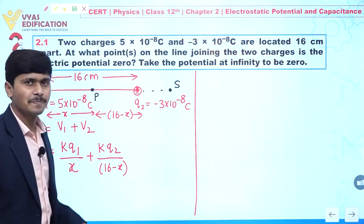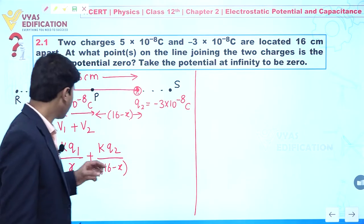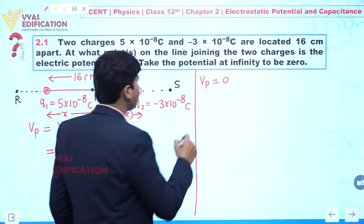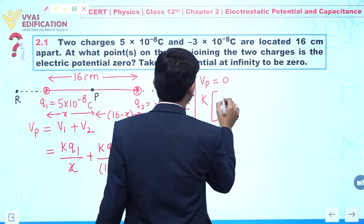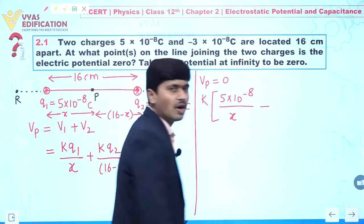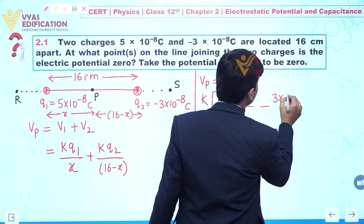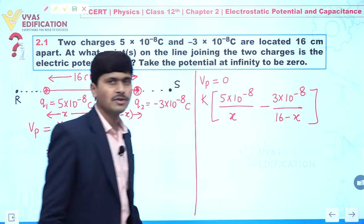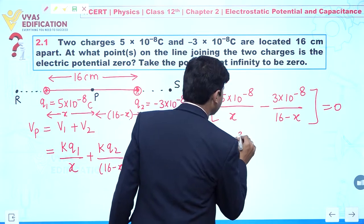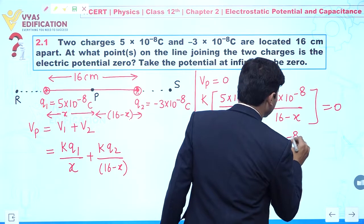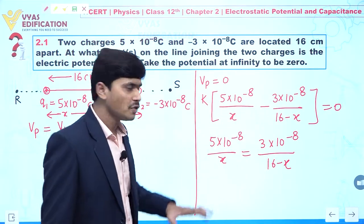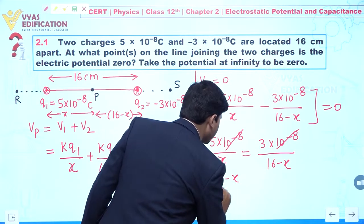Since Q2 is negative, we can find a position where electric potential is zero. Setting Vp = 0, taking K as common: 5 × 10⁻⁸ / X + (−3 × 10⁻⁸) / (16 − X) = 0. Since K cannot be zero, the bracket term must be zero, giving us: 5 × 10⁻⁸ / X = 3 × 10⁻⁸ / (16 − X), which simplifies to (16 − X)/X = 3/5.